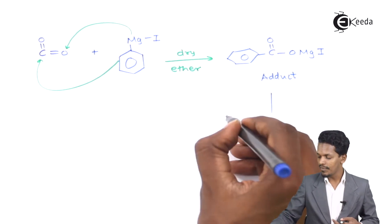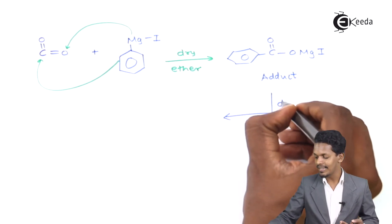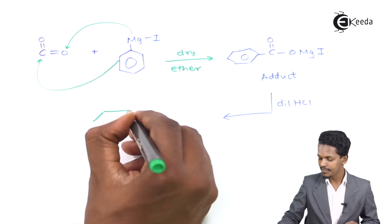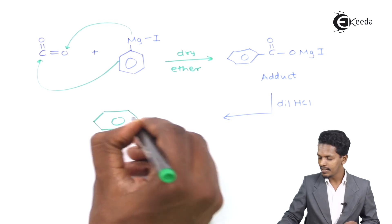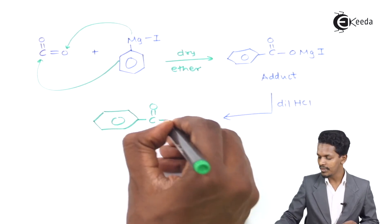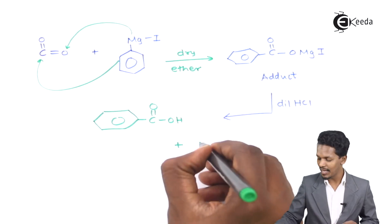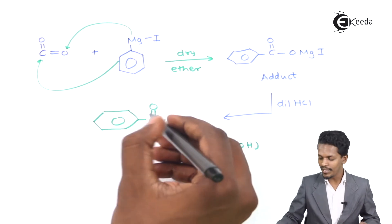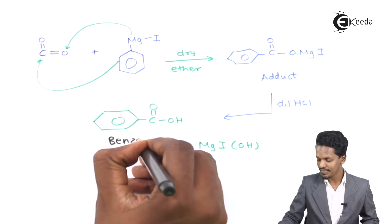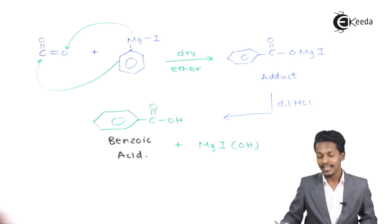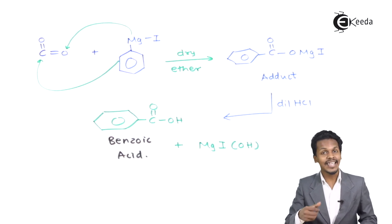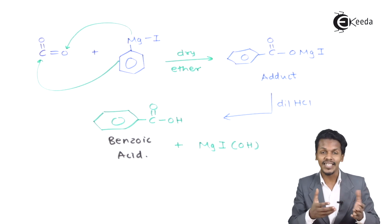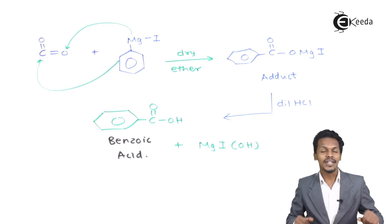The product is not yet obtained from the adduct, so we react it with dilute HCl. This adduct is converted into a benzene ring associated with C=O-OH, that is benzoic acid, along with the byproduct MgI-OH. So the product obtained is benzoic acid. This is how we can prepare carboxylic acid by the reaction of dry ice with Grignard reagent.